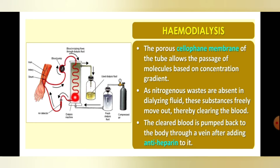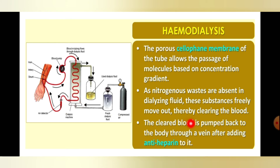The cleared blood is pumped back to the body through a vein. Before sending the purified blood back to the patient, anti-heparin is added. Anti-heparin is the opposite of the anticoagulant — it is a coagulant, which restores the blood's normal clotting ability before it re-enters the body.